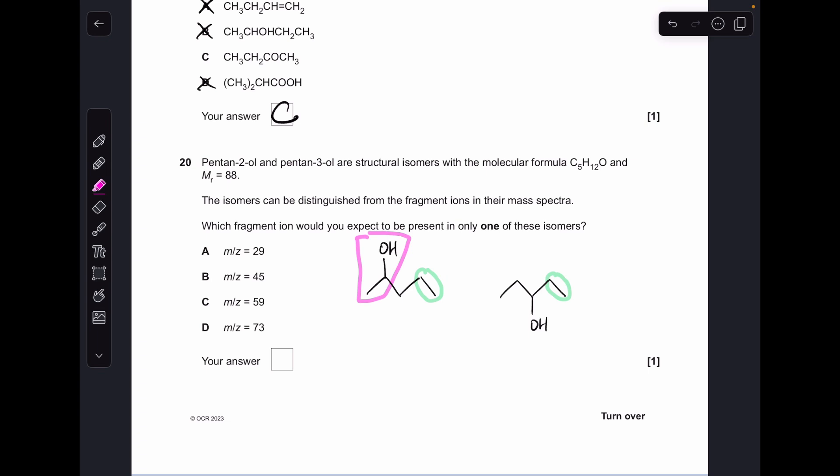Just for revision, they can both make a 59—this is going to look very messy now. If I cut that there, that would give you 59, CH3CHOHCH2, and this is also 59, CH3CH2CHOH. And the 73 comes from both of them losing a methyl fragment, losing 15, so they can both do that.